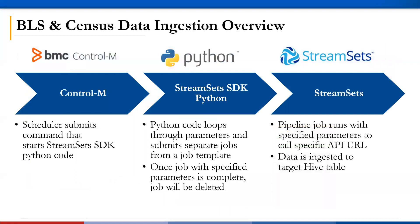To bring it all together in the correct order of events: we have a Control-M scheduler that submits the command to start the StreamSets SDK Python code. Within the StreamSets SDK code, we loop through a list of years or series IDs to use as parameters to spawn jobs from a job template. It will wait for the job to complete, and then delete it. Within the StreamSets pipeline job itself, the job parameter is used to call a specific API URL. The data is then ingested to our Hive table. In the end, we were able to engage multiple technologies to enhance each other in data ingestion and allow easier data access for subsequent data processing in Alteryx and eventually Tableau.